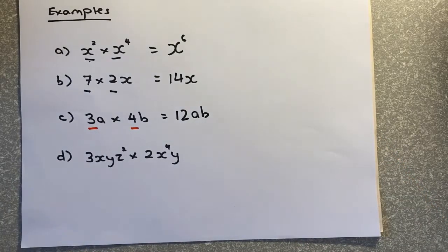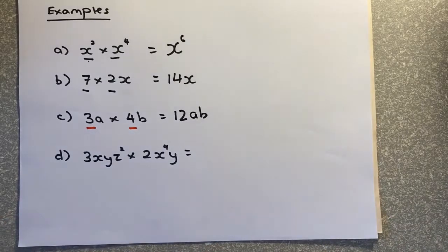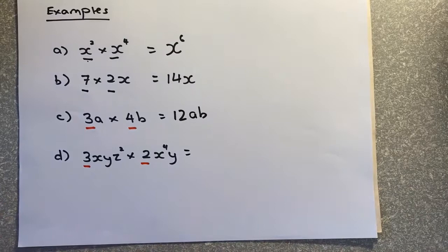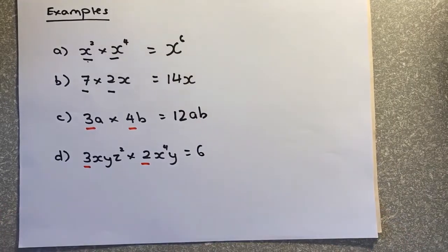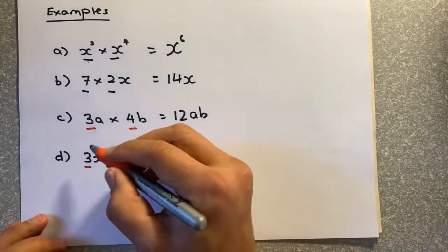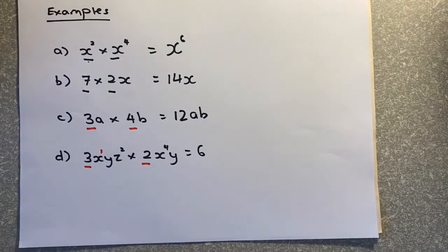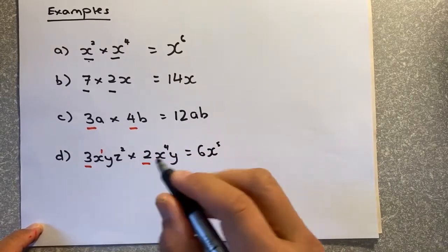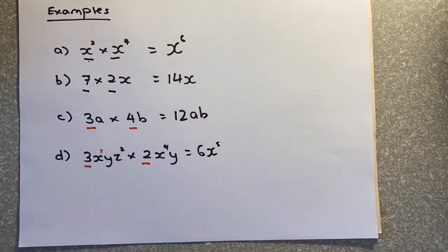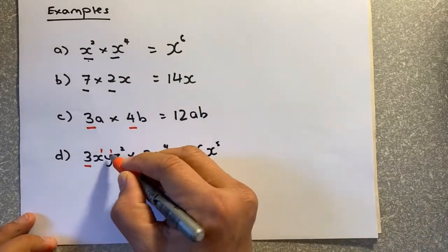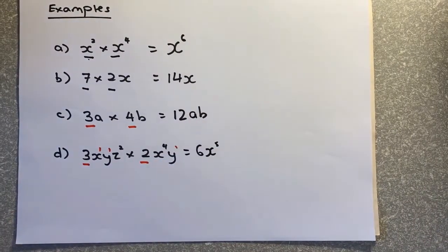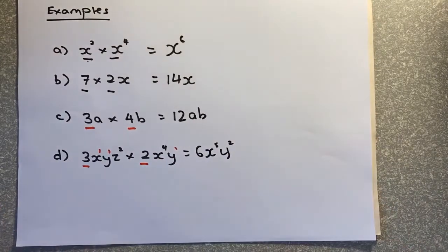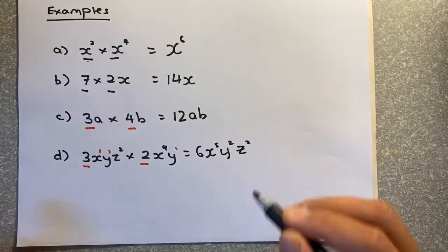The hardest of the lot will look like that. So what you do, you multiply the numbers with numbers, so 3 multiplied by 2 is 6. x, there's no power, it's actually x power 1. So x1 plus x4 is going to be x5. You don't multiply, you add the power, 1 and 4 give you 5. y is again, power 1 and 1 here. So what do you reckon? So y, 1 plus 1, give you y squared, and z squared on its own, so it will remain as z squared.